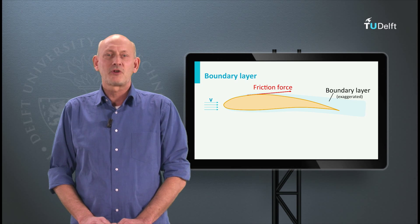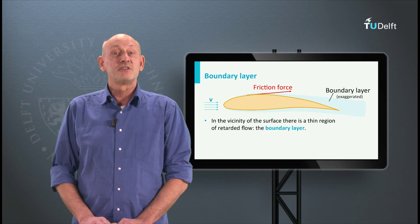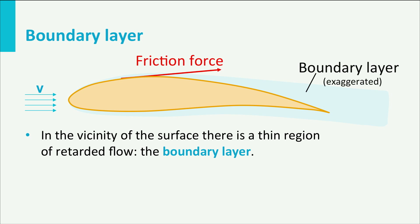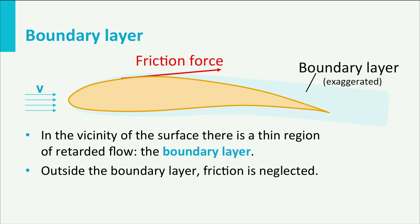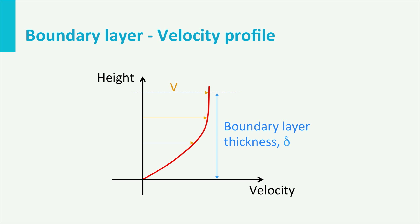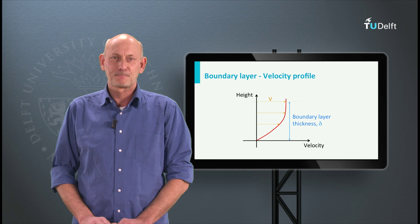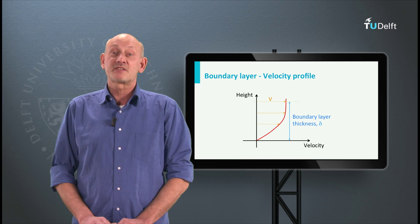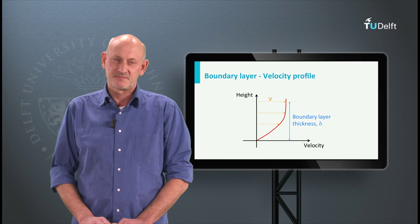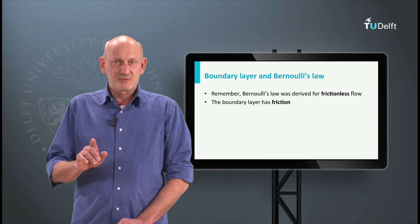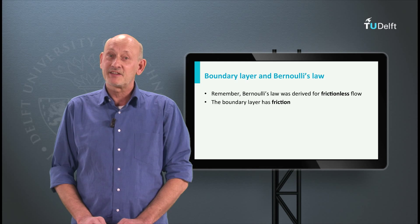Prandtl divided the flow field around an object into two distinct regions: a region near the surface that is affected by friction — the boundary layer — and a region further away from the surface in which friction could be neglected. Since the fluid adheres to the surface, the velocity at the surface is zero. The boundary layer will have a velocity profile going from zero at the surface to the undisturbed free stream velocity at a distance delta from the surface, the boundary layer thickness. So, finally, 136 years after D'Alembert presented his contradiction, Prandtl provided the theory to tackle this paradox. And remember, Bernoulli's principle was derived for frictionless flow, so it is not valid within the boundary layer.